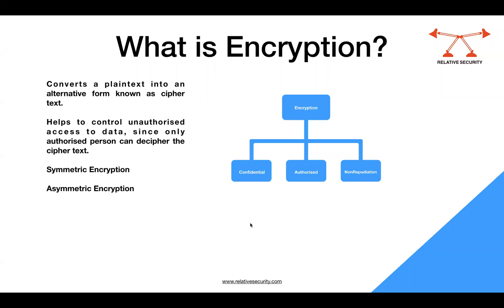Another question is: what is encryption? Encryption is to convert a plain text into an alternative form known as ciphertext. Plain text is something that any person who has access to the data can read and understand — what is written on the paper or any other form of representation of the data. Ciphertext is something that if you try to read it, you will not be able to understand it.